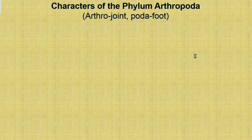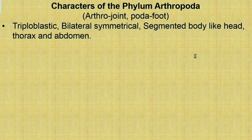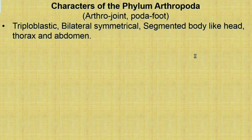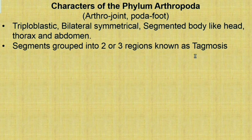The general characters of Phylum Arthropoda: their body is triploblastic, meaning they have three types of germ layers. They have bilateral symmetry and a segmented body. The body can be divided into three parts: head, thorax, and abdomen. Segments are grouped into two or three regions called tagmosis.